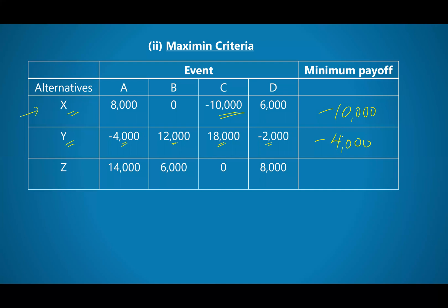Then for Z we have 14,000 event A, 6,000 event B, zero event C, 8,000 event D. So between you and me, you know the worst would be a zero. Now negative 10 on X, negative 4,000 on Y, zero on Z.